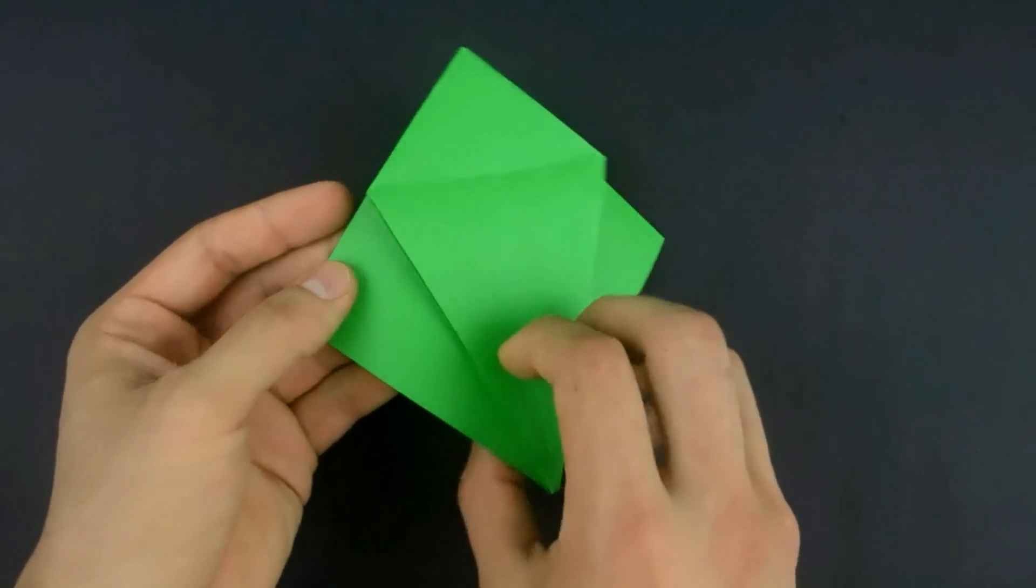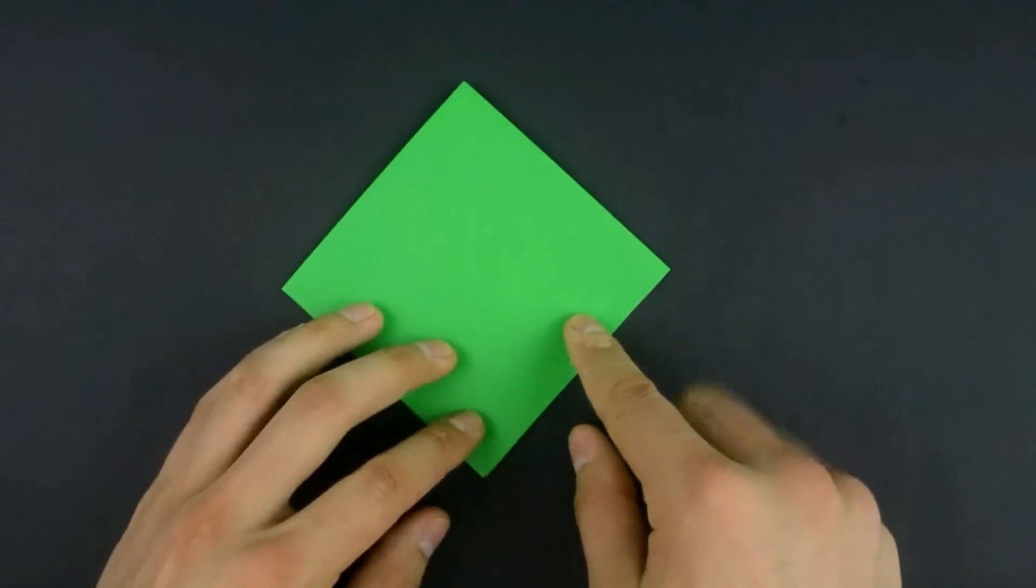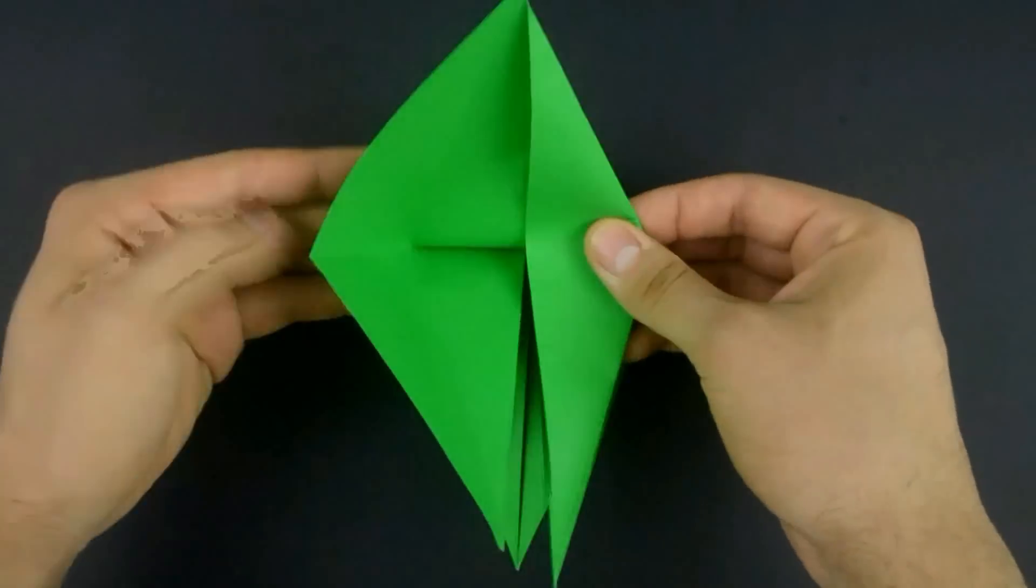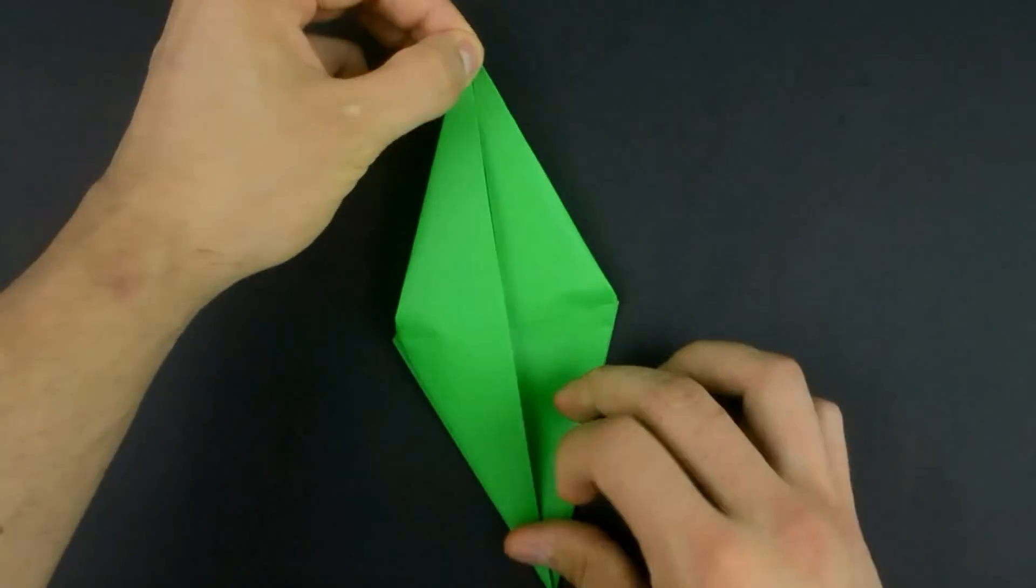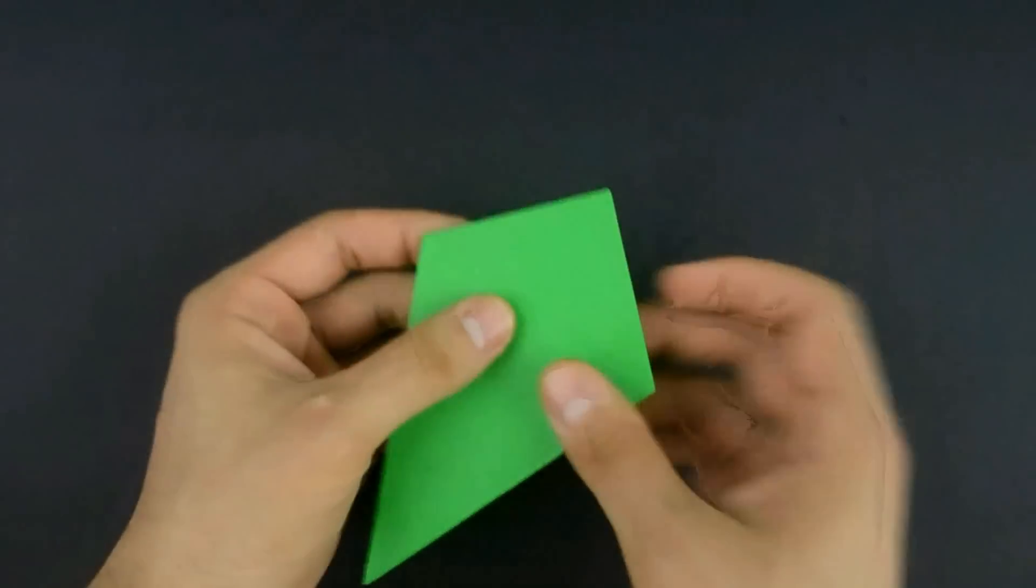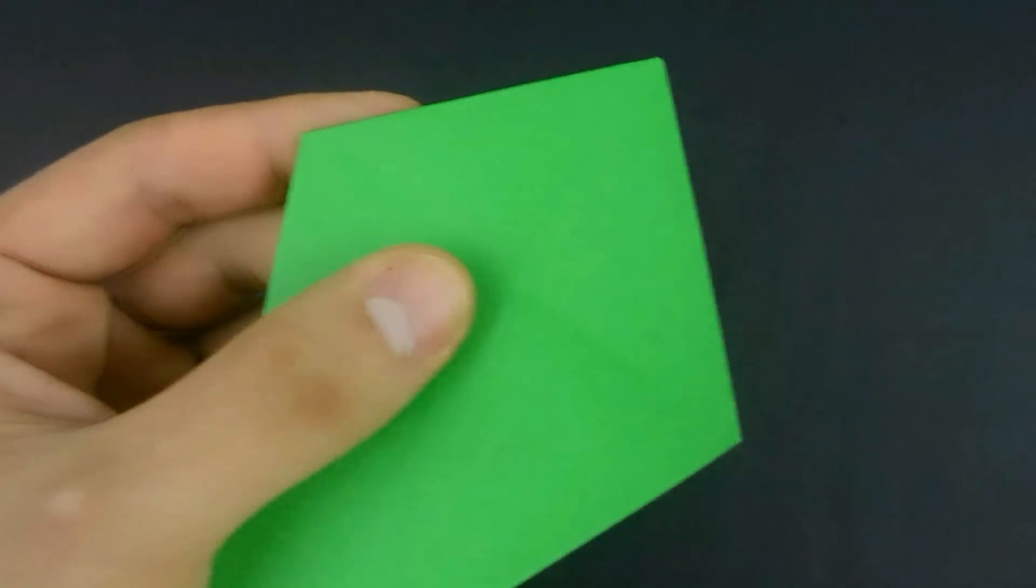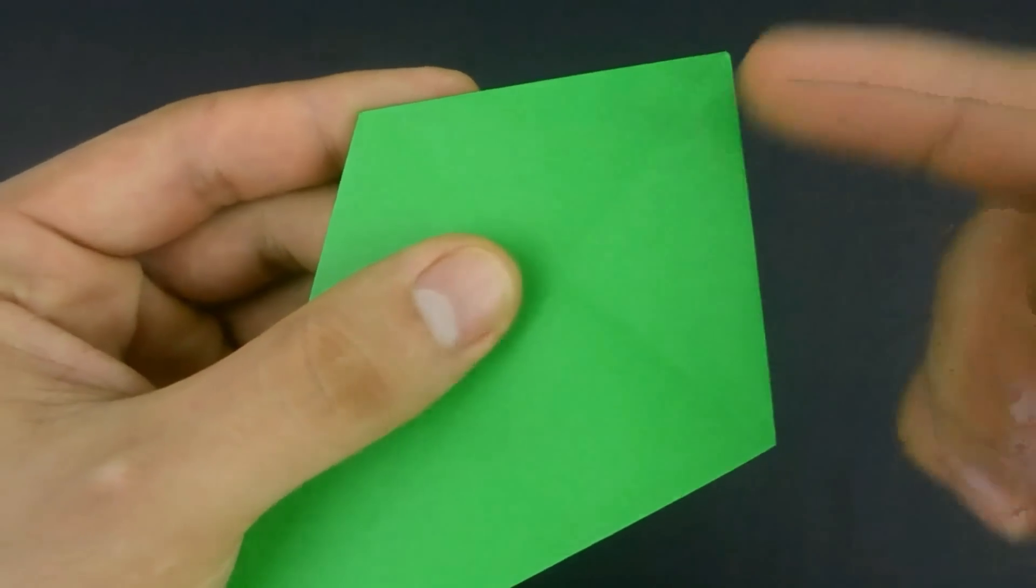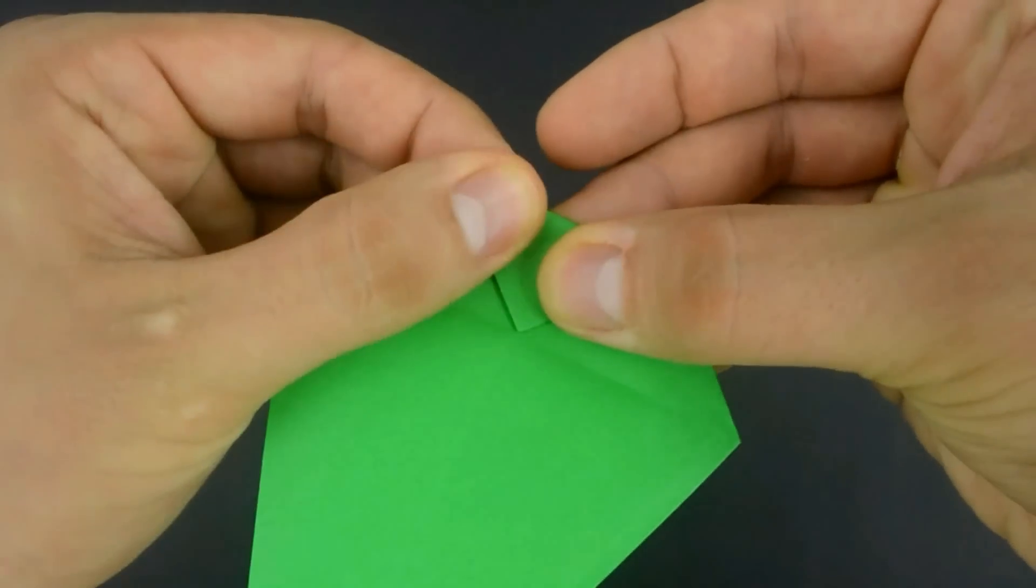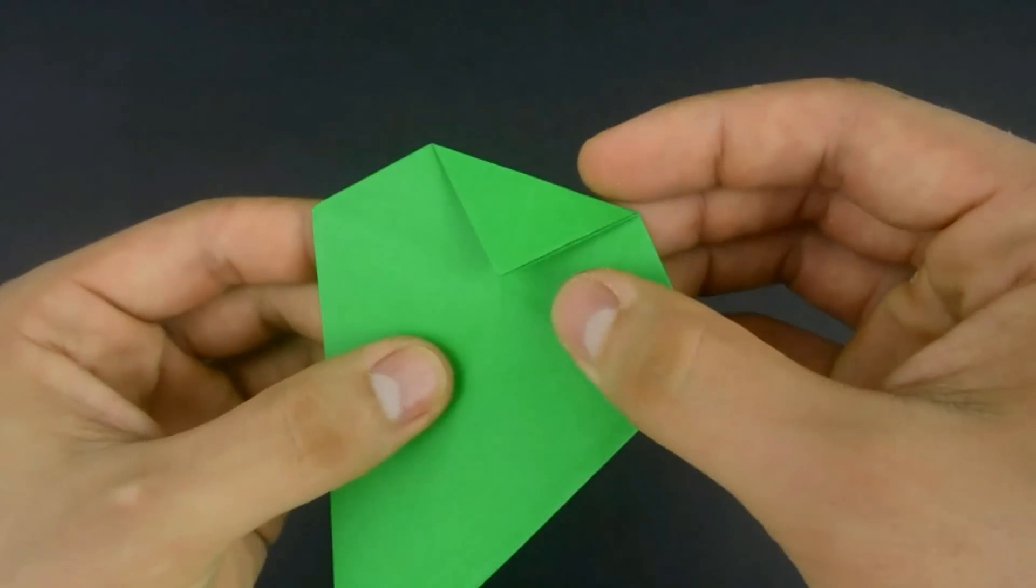Repeat on the other side, exactly the same. For the next step, let's fold the top corner to the line just below. Here fold strongly. Unfold.